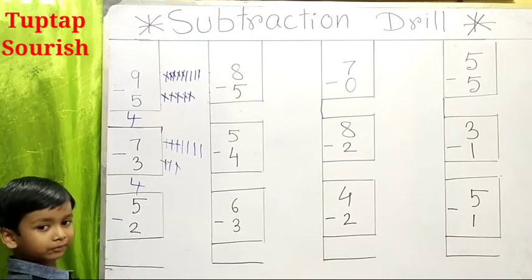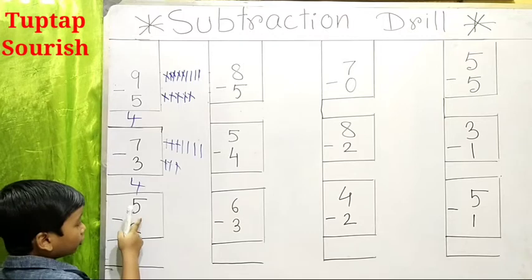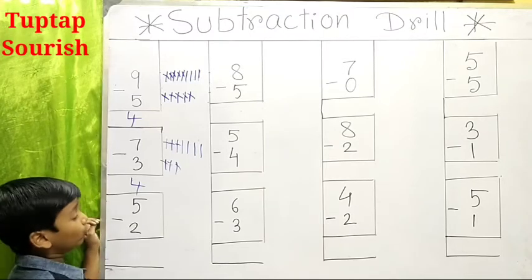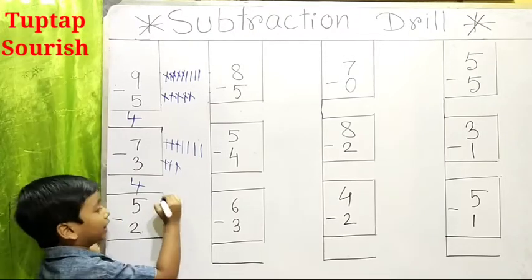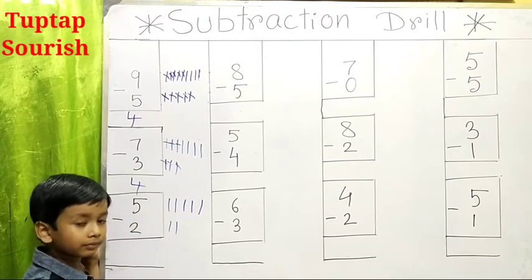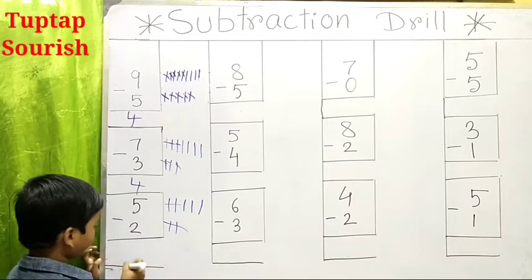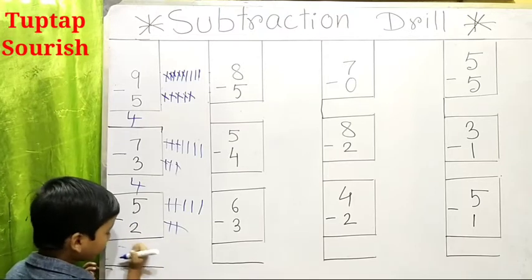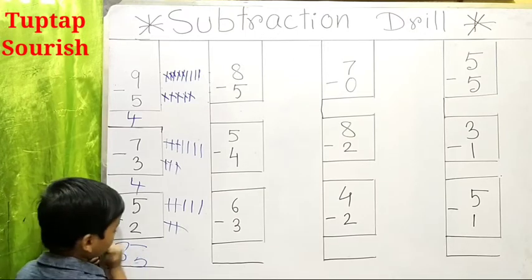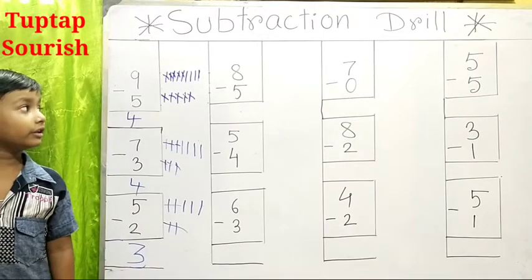Next example: 5 minus 2. You think you have got 5 rubbers and you have lost 2 of them. Let's draw here 5 lines: 1, 2, 3, 4, 5. And here 2 lines: 1, 2. So our answer is 3. Is it not interesting?